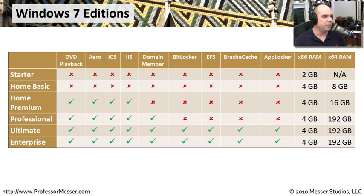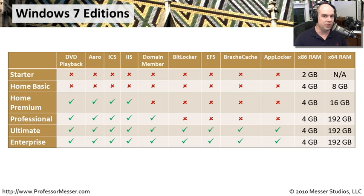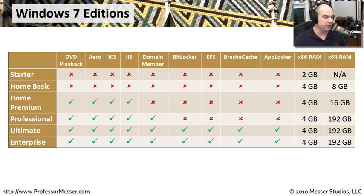Here's a summary of all the different Windows 7 editions — Starter, Home Basic, Home Premium, Professional, Ultimate, and Enterprise. I've put a green check mark where capabilities are available in a given version and a red X where they're not. For example, connecting to a domain is only possible with Windows 7 Professional, Ultimate, and Enterprise — no other versions allow you to connect to a Windows domain.